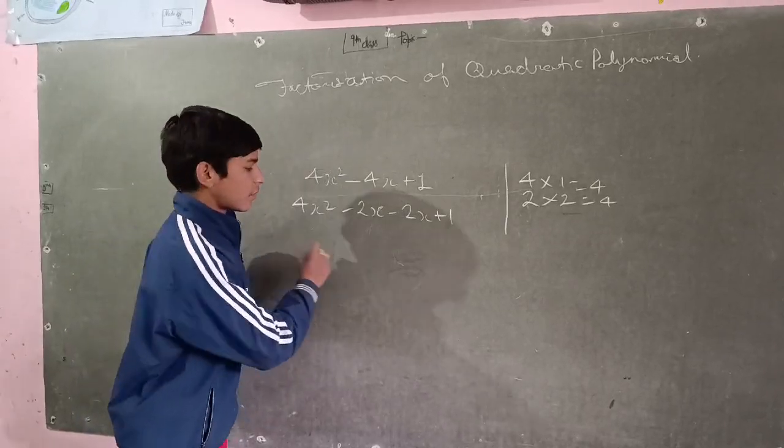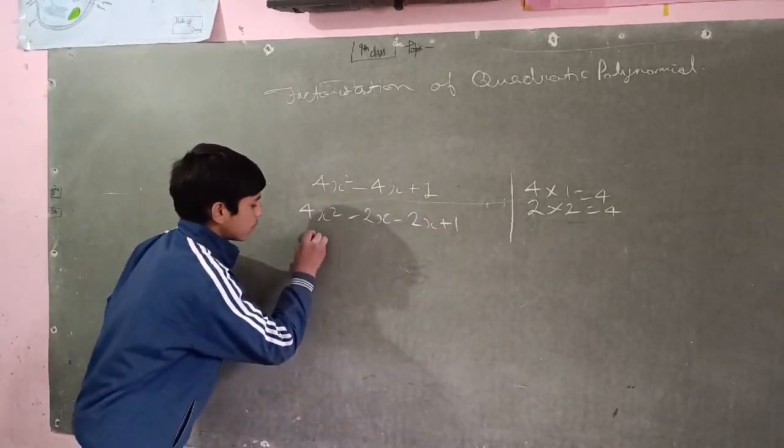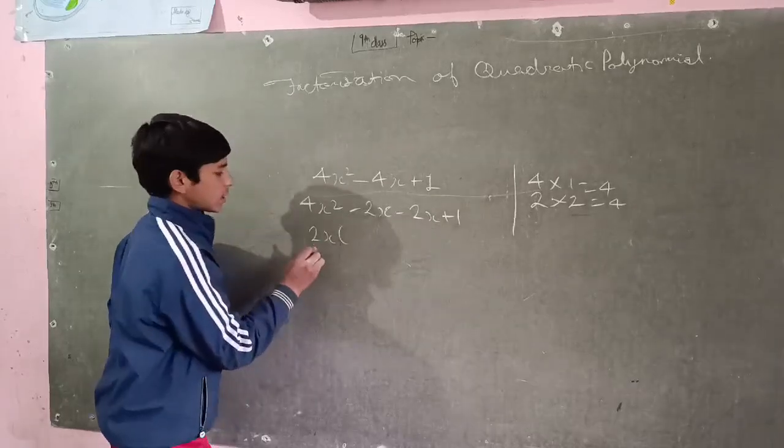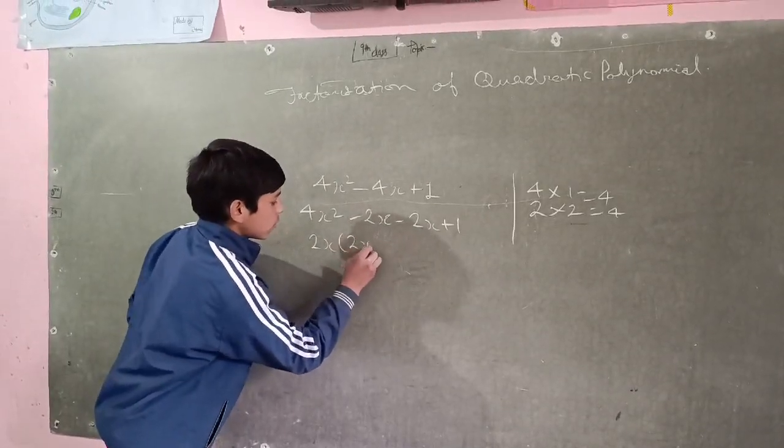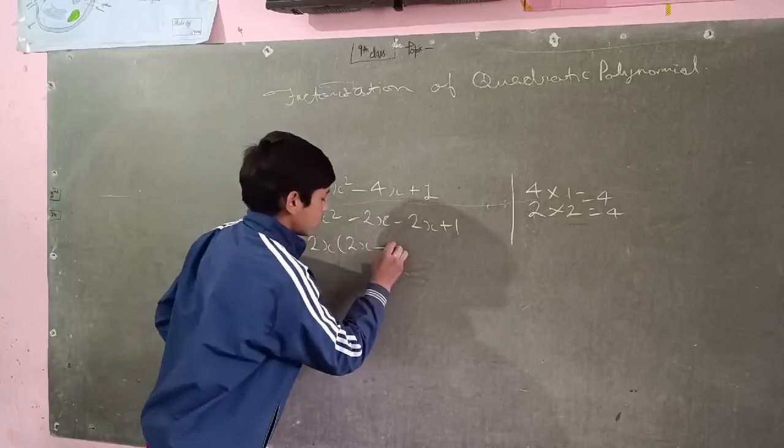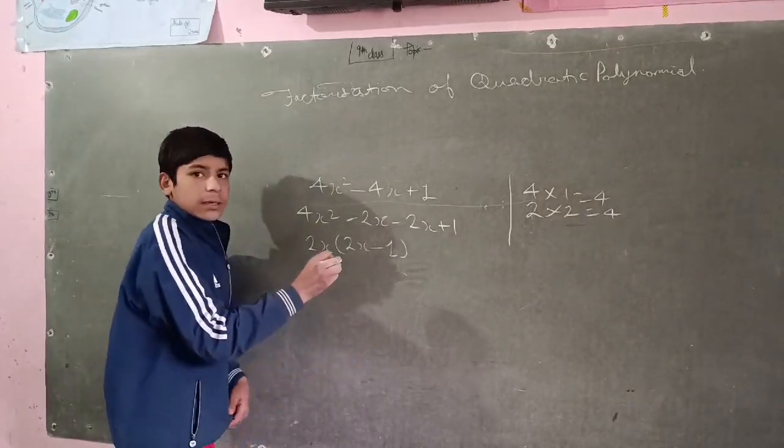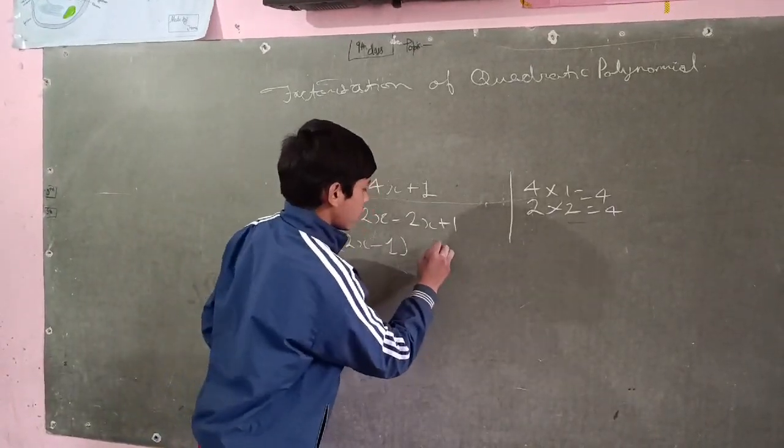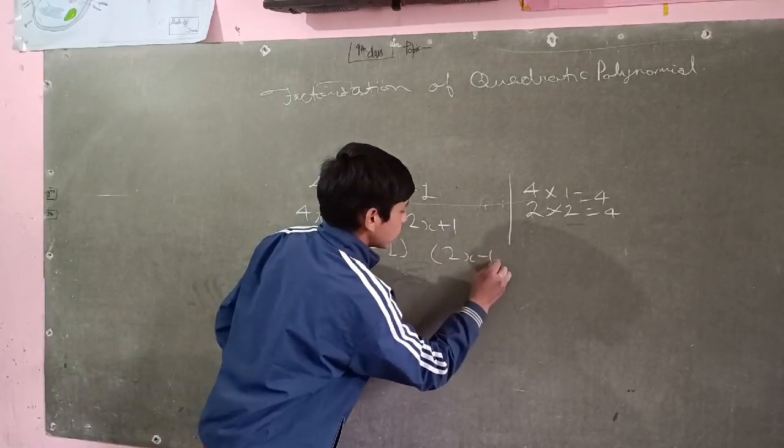Now we find the common factor. 2x minus 1 and 2x minus 1.